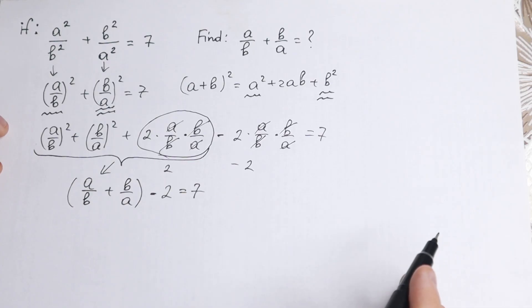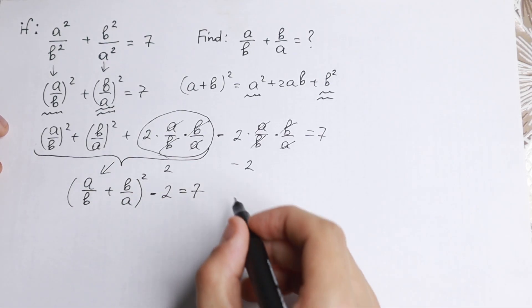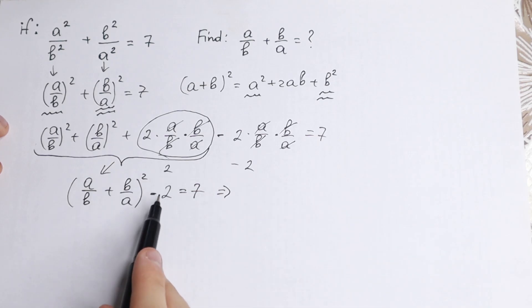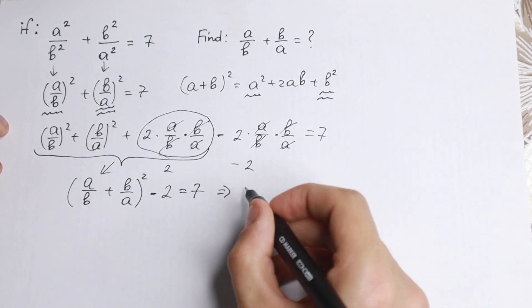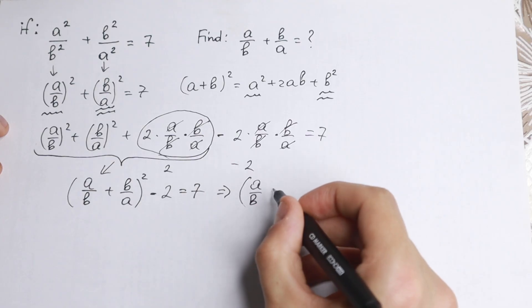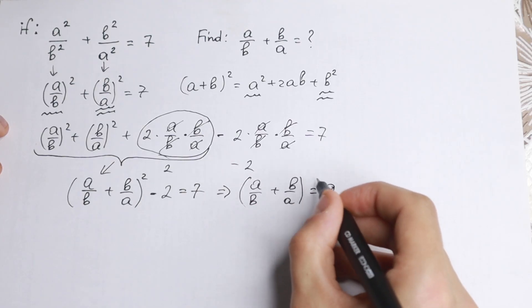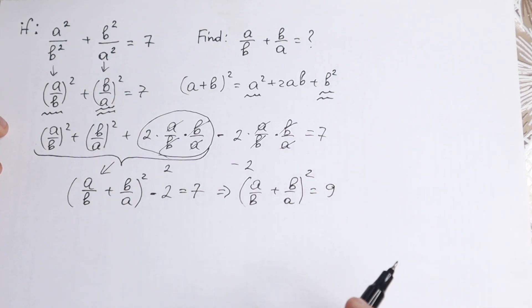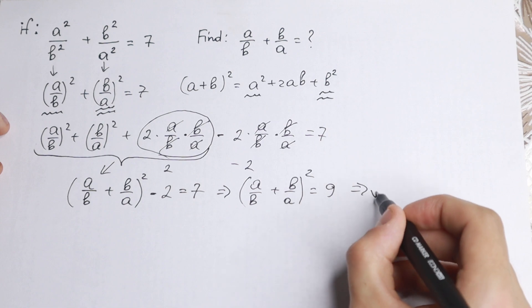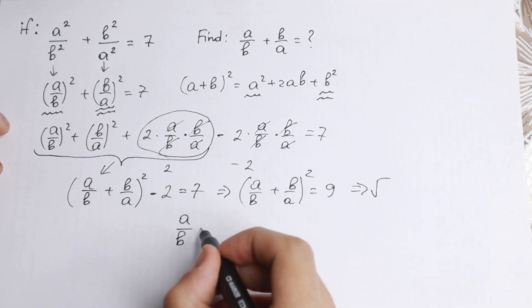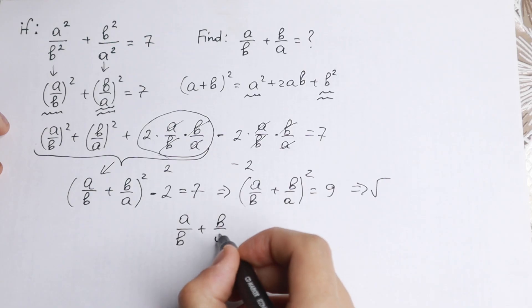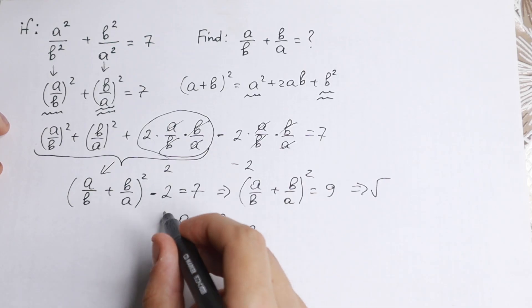Right now, take a look closely. Of course we see a square. We can easily bring this 2 on the right hand side and we will have (a/b + b/a)² equal to 9. I hope you see right now that last step: we need to take square root on both sides and we will have 3. If we take square root, you'll have a/b + b/a equal to 3.